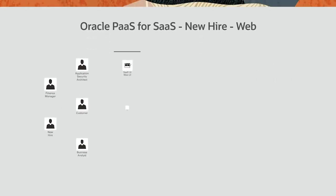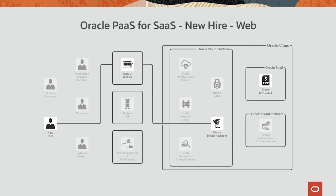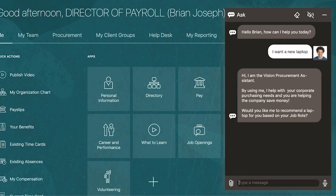The next persona we're going to take a look at is from the perspective of a new hire. The new hire was told to procure a laptop and business cards through Vision's pre-built digital assistant that has been integrated directly with ERP Cloud Procurement Module. The new hire says, "I want a new laptop." The digital assistant recognizes the request and asks if it would like to recommend a laptop based on his job role. He says yes.